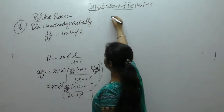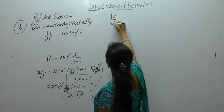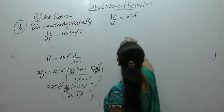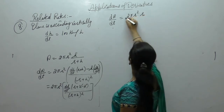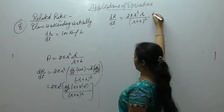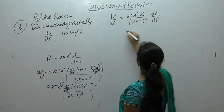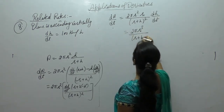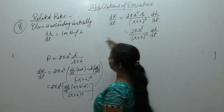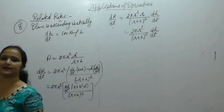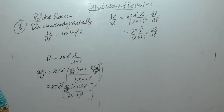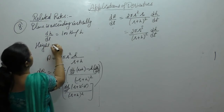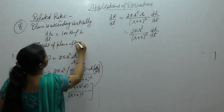So we get 2 pi r square dh by dt common, r plus h minus h upon r plus h whole square. In the next step, dA by dt equals 2 pi r square times r upon r plus h whole square times dh by dt. So 2 pi r cube upon r plus h whole square times dh by dt. dh by dt is 100 km per hour. Height of plane after 3 minutes.